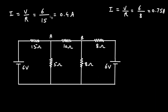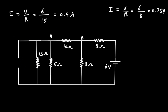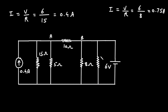Now let's replace these two voltage sources with their equivalent current sources. The 15 ohm resistor, which was in series, will now be in parallel. The direction of the current source will be according to the polarity of the voltage source, and the value of current will be 0.4 ampere. Similarly, the 8 ohm will now be in parallel, and the 6V voltage source is replaced by a current source of 0.75 ampere.